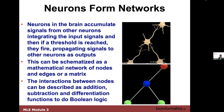Neurons accumulate signals from other neurons, integrate the input signals, and if a threshold is reached, they fire. If you don't hear a sound, your brain won't think there's any sound. But if you can get past a threshold, then you'll hear a sound and might turn to the source of that sound.